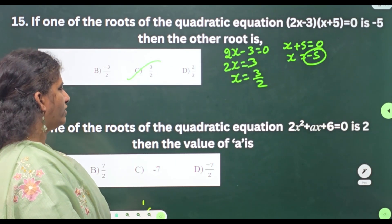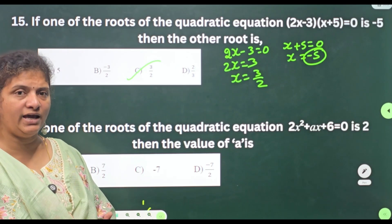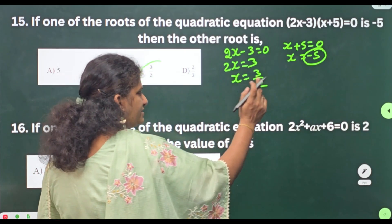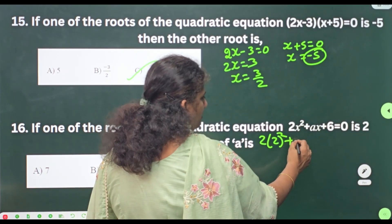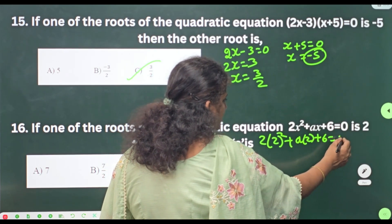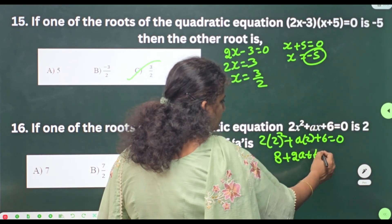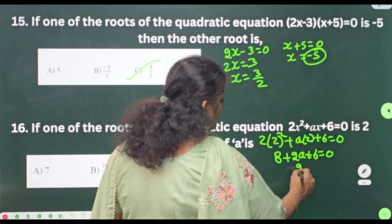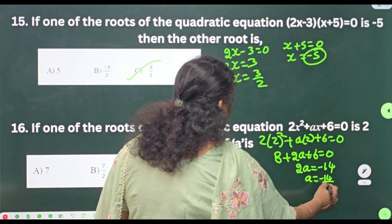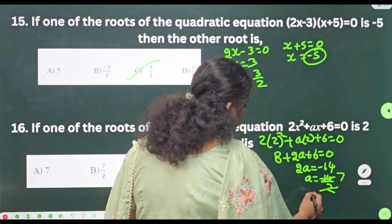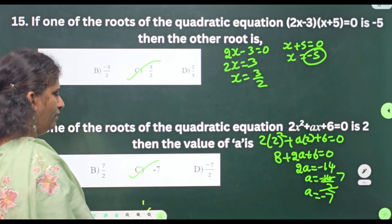Sixteenth one: if one of the roots of the quadratic equation 2x² + ax + 6 = 0 is 2, then the value of a is — substitute the root x = 2: 2(2)² + a(2) + 6 = 0. That gives 2(4) + 2a + 6 = 0, which is 8 + 2a + 6 = 0, so 14 + 2a = 0, giving 2a = −14, therefore a = −7. Option C, minus 7.